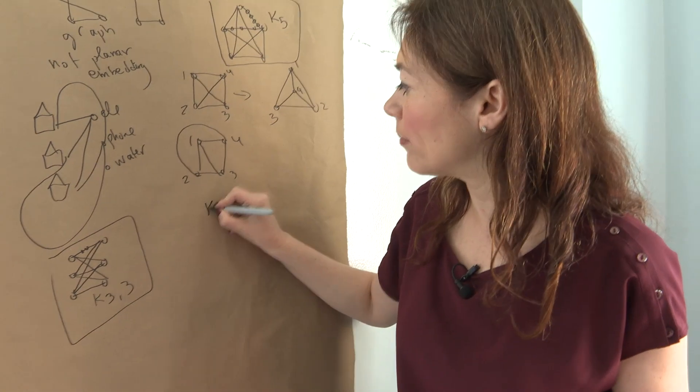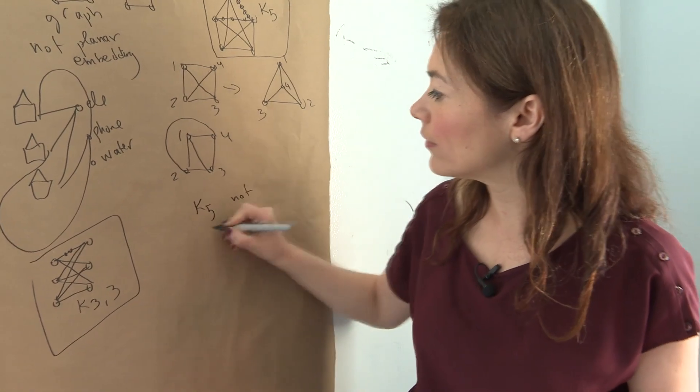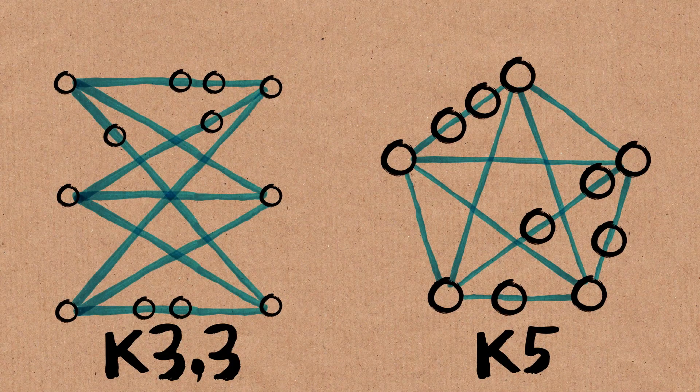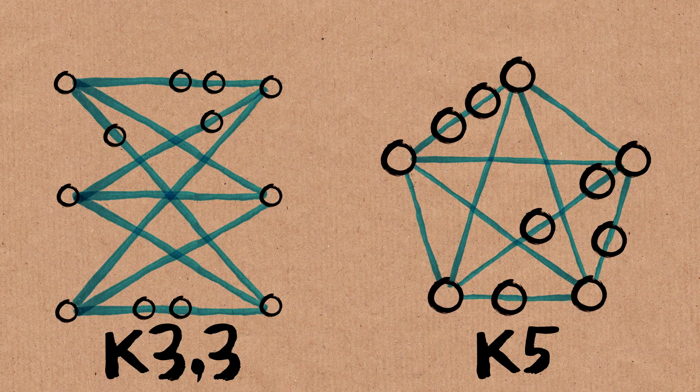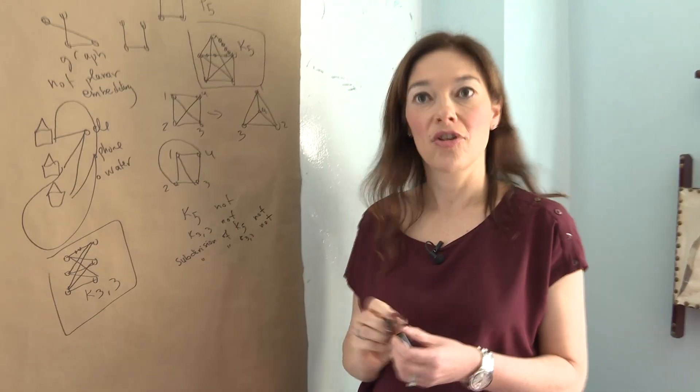So we know that K5 is not embeddable, K33 is not embeddable. And we also convinced ourselves that subdivisions of them, they're all not embeddable. And the theorem is, that's it. The only reason some graph is not embeddable is because there's one of those bad guys sitting in it.